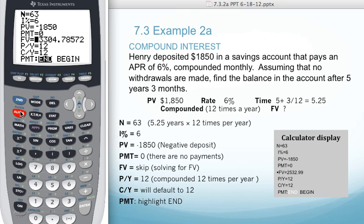We're going to hit alpha and enter to solve. In this case, we get $2,532.99 in the account after 5 years and 3 months.